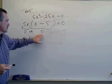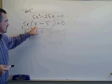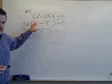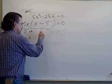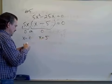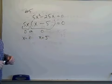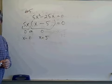Then how about this factor? What could I put in place of x that would make this quantity become 0? Well, it would be if x was 5, wouldn't it? 5 minus 5 would make 0. And those are my two solutions to that quadratic equation.